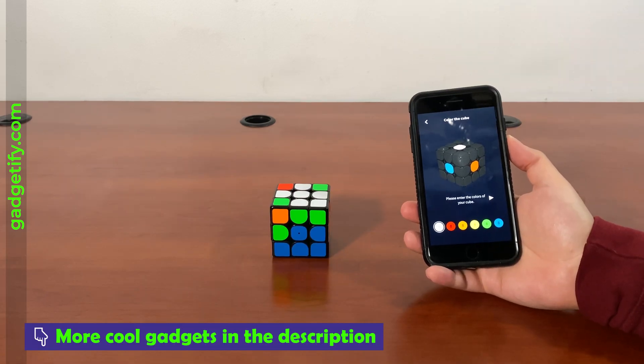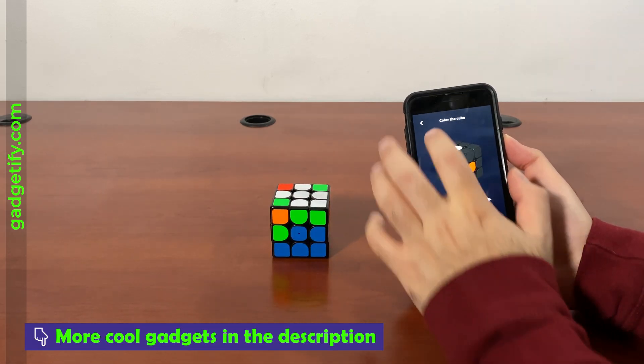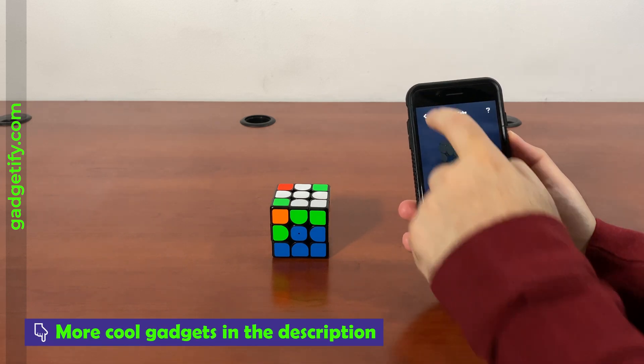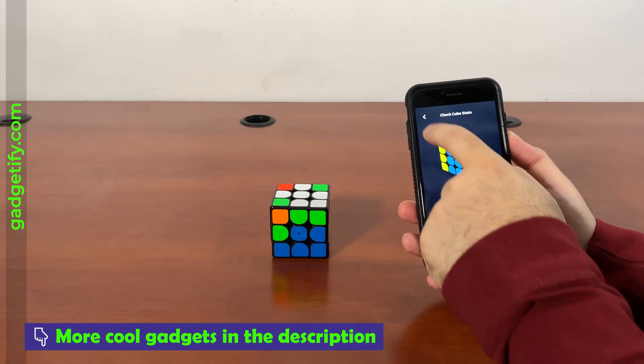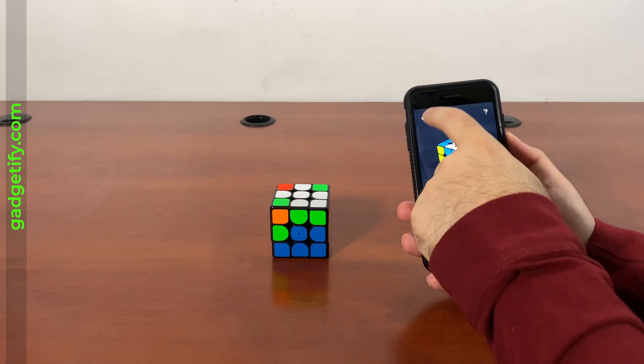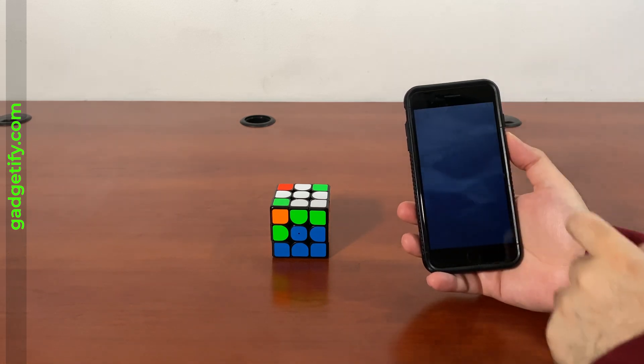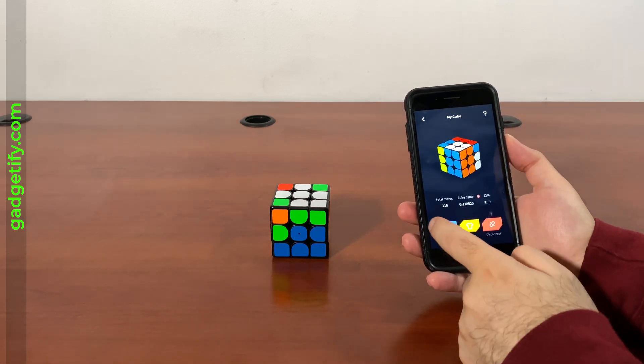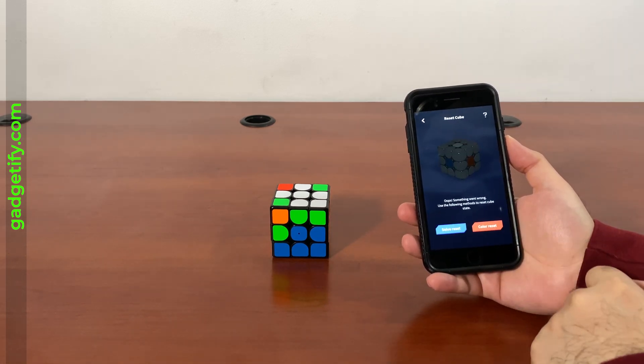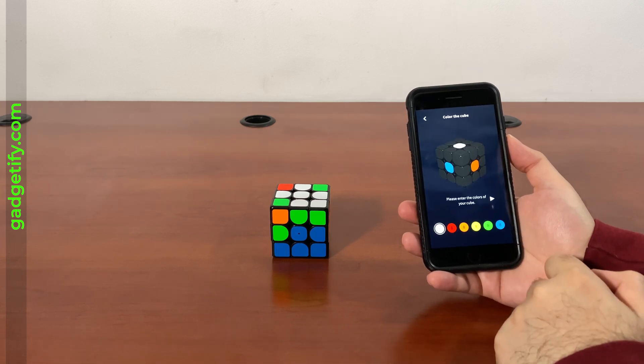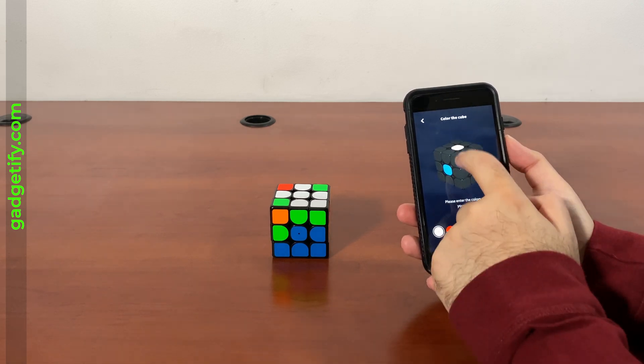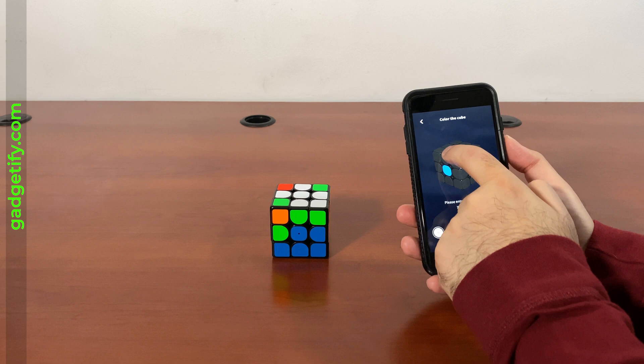if you ever have trouble syncing the cube, you can always do the reset. So you actually go here and tap here and here it has the reset option. So it's not the right state. I have to do the color reset and here I can just select like that.